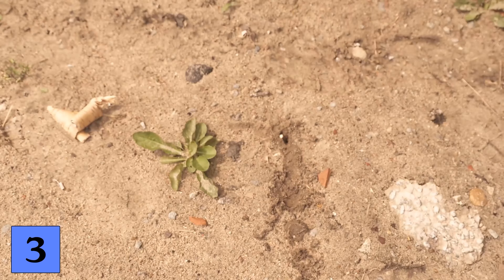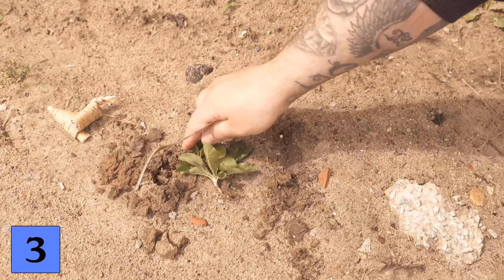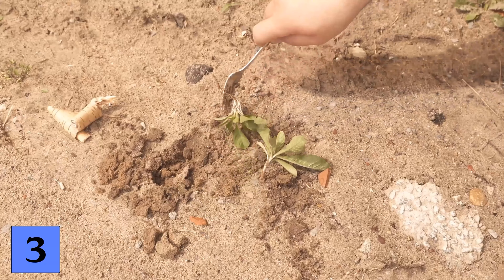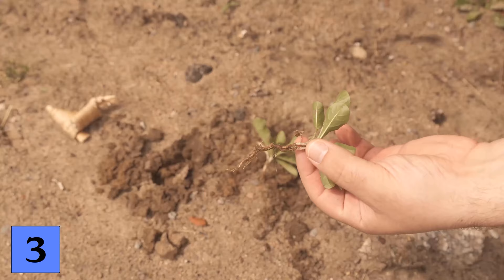If you had just pulled the weed by hand, the root would have been torn off somewhere and you would only have pulled out the upper green. But thanks to the fork, you can get a lot more out. And once the root is removed, the weeds won't come back as quickly either.